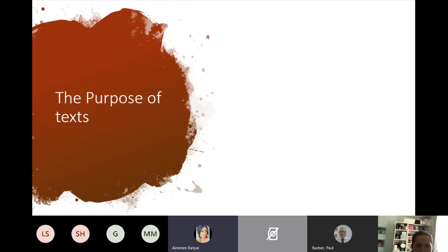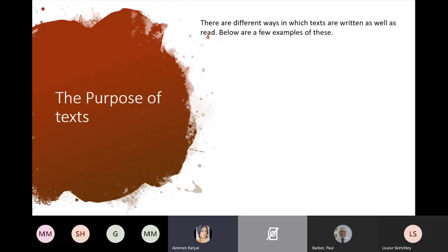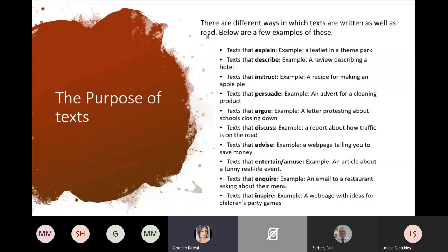The purpose of texts: there are different texts which are written as well as read. Texts that explain — an example would be a leaflet explaining a theme park. You might see a review, and the purpose of that would be describing. A recipe would be instructing people. Texts that persuade would be an advert for a cleaning product. Texts that argue — a letter protesting about schools closing down. A lot of these examples can fit into each other, so it might not necessarily be a letter, it could be an email; it might not be a report, it could be an article.